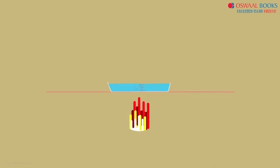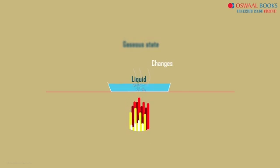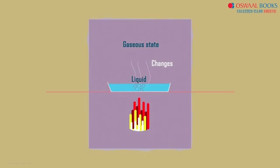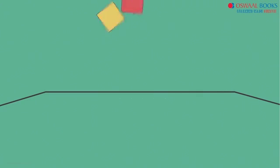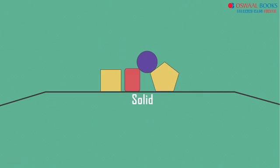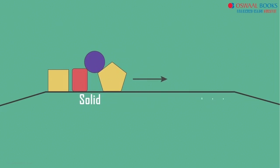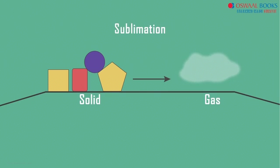Let's continue this process. What happens on further application of heat? This boiling water will start evaporating — water, which is liquid, will change to the gaseous state. This is called vaporization. But there are some substances which change directly from solid to the gaseous state — solid to gas directly. This process is called sublimation.